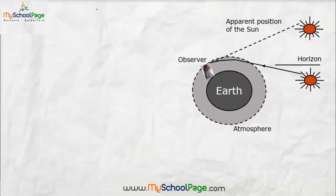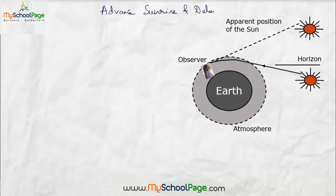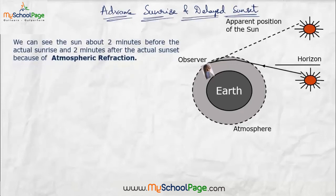So now let's understand the concept of advanced sunrise and delayed sunset. Did you know that we can see the sun about two minutes before the actual sunrise and two minutes after the actual sunset because of atmospheric refraction?